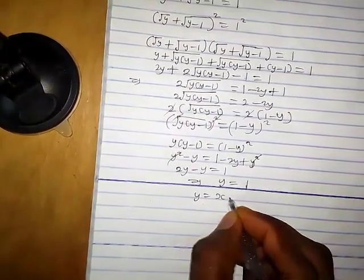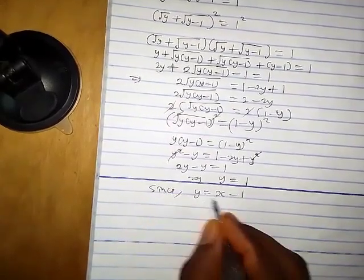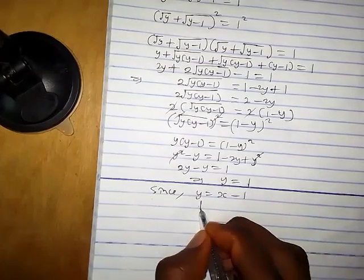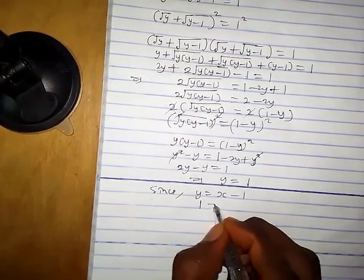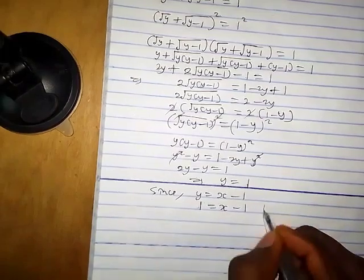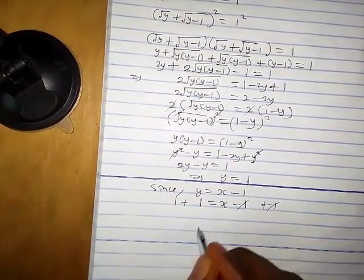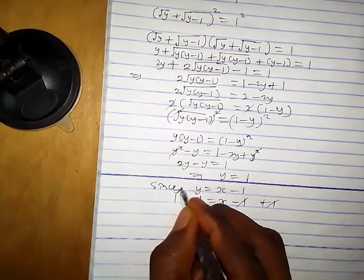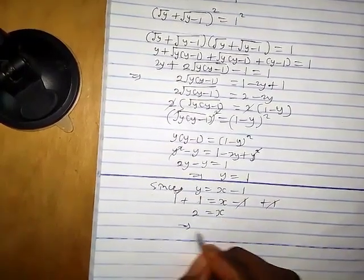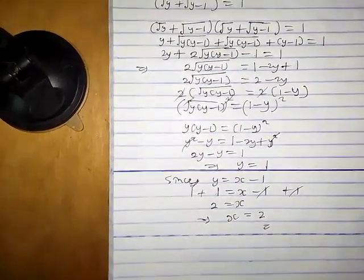Since y equals x minus one and the value of y we obtained is 1, we substitute: 1 equals x minus one. Adding 1 to both sides gives 1 plus 1 equals x, so x equals 2. The value of x is simply 2.